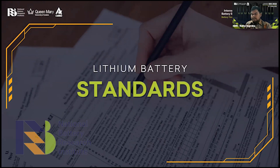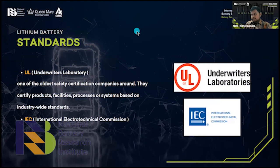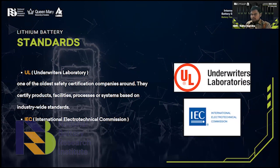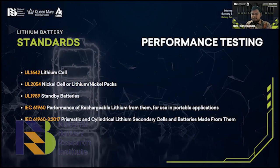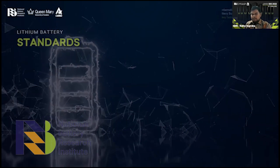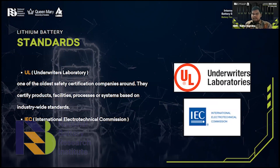Lithium battery standards — worldwide, there are a lot of standards, but the common standards for batteries are UL and IEC. UL stands for Underwriters Laboratories — it is one of the oldest safety certification companies, covering the North American area. IEC is from Europe. The IEC and UL differ significantly: IEC specifies the minimum device safety requirements, but the UL standard specifies comprehensive technical details in terms of product. Standards can be divided into two: performance testing and safety testing. For UL, the lithium cell complies with UL 1642, and for battery packs, UL 2054. For standby batteries like UPS, it is UL 1989. For IEC, IEC 61960 is for the performance of rechargeable lithium batteries, especially for portable applications. IEC 61960-3 year 2017 is for prismatic and cylindrical lithium secondary cells and battery packs.